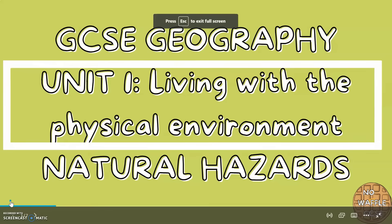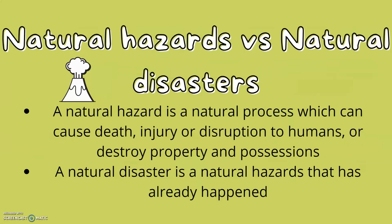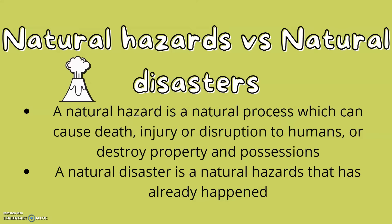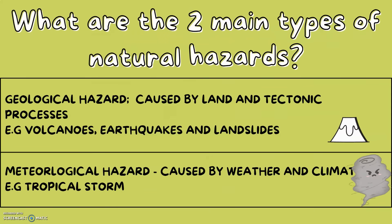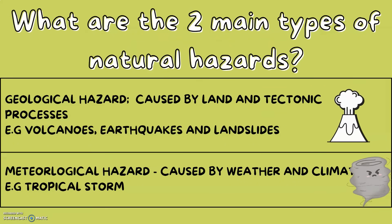Unit 1: Living with the Physical Environment — Natural Hazards. What's the difference between a natural hazard and a natural disaster? A natural hazard is a natural process which can cause death, injury, disruption to humans, or destroy property and possessions — for example, a tropical storm or a volcano. A natural disaster is a natural hazard that has already happened, for example, Hurricane Katrina.